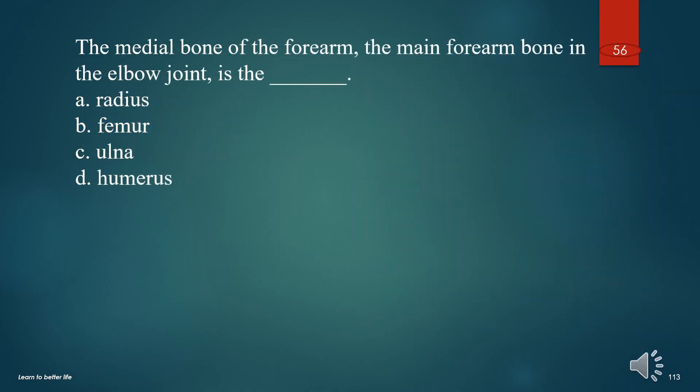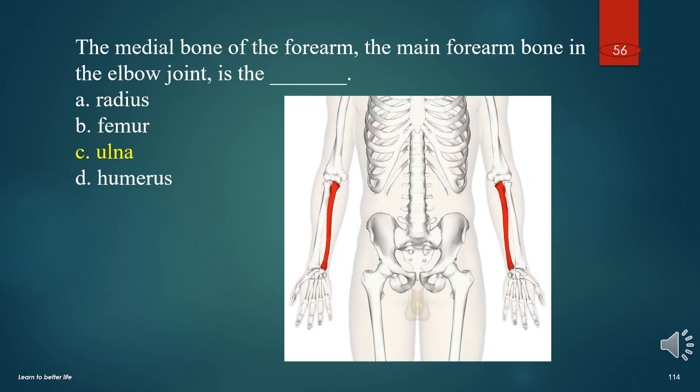The medial bone of the forearm, the main forearm bone in the elbow joint, is the? A. Radius. B. Femur. C. Ulna. D. Humerus. The answer is C. Ulna.